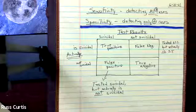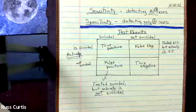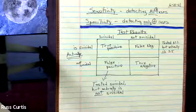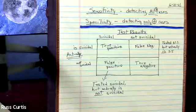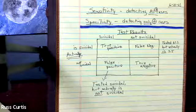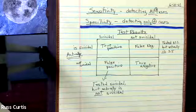Now, specificity is the accuracy of a cutoff score in excluding those without the condition. So typically, with specificity, if we increase the cutoff score for a depression scale, meaning the higher the score, the more depression they have,